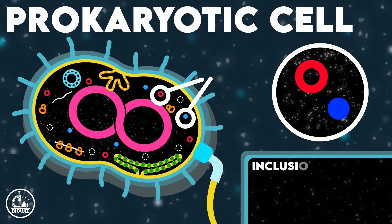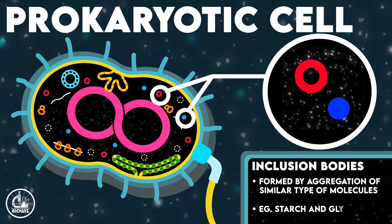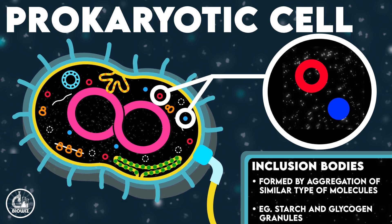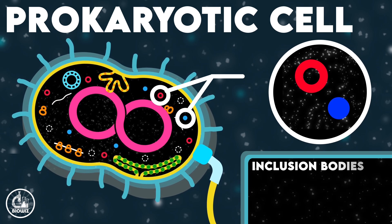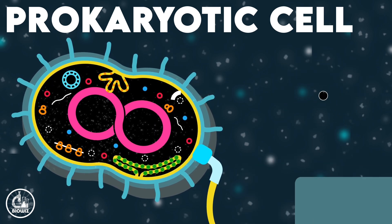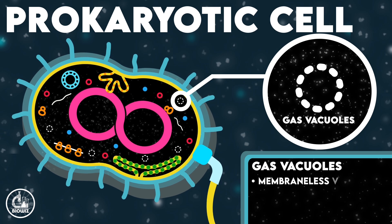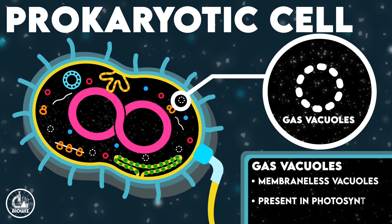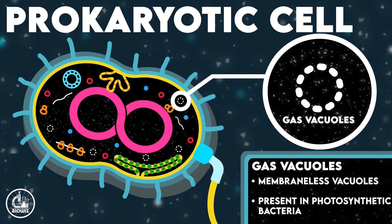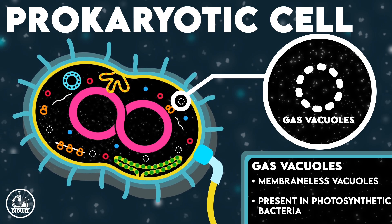Inclusion bodies are structures formed by aggregation of similar types of molecules and act as storage structures of prokaryotes. Gas vacuoles are membrane-less, air-filled spaces found in the cytoplasm of photosynthetic prokaryotes. These structures help to provide buoyancy to the cell in aquatic habitats.